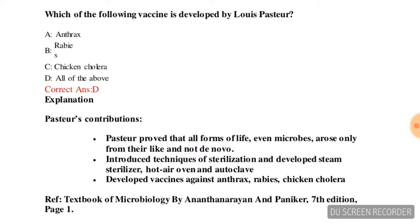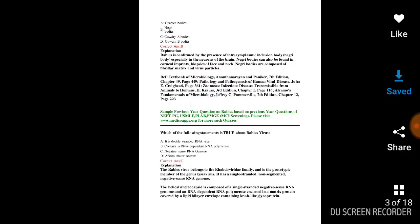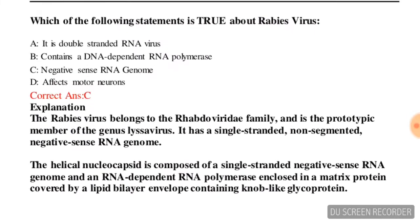Next question: which of the following statements is true about rabies virus? Options are: it is a double-stranded RNA virus, it contains a DNA-dependent RNA polymerase, it has a negative-sense RNA genome, or it affects motor neurons. The correct answer is option C — negative-sense RNA genome.